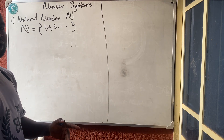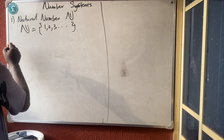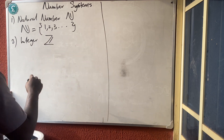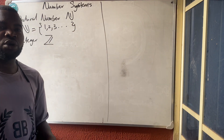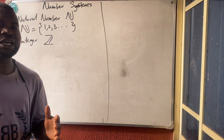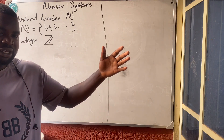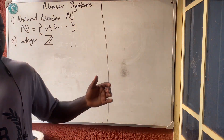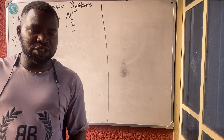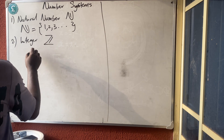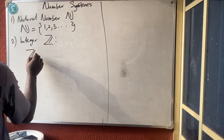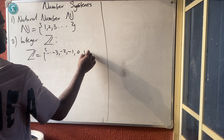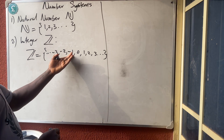Zero is neither positive nor negative, so zero is not a natural number. Natural numbers are only positive whole numbers. Number two are the integers, represented as Z. Integers are simply all the whole numbers — whether negative, zero, or positive. Integers are the set of {..., -3, -2, -1, 0, 1, 2, 3, ...}: negative whole numbers on the left, zero in the middle, and positive whole numbers on the right.